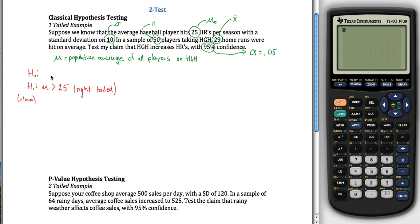Your null hypothesis is, in a way, saying your claim is wrong — but it's not quite that, because we want mu is equal to 25, not mu is less than or equal to 25. Your null hypothesis will always have equality. What it's saying is HGH doesn't matter one way or another: mu equals 25, meaning the population average of all players on HGH is just the same as the population average of all players.